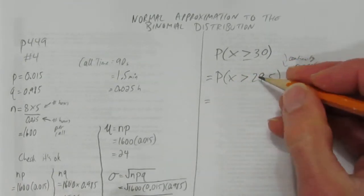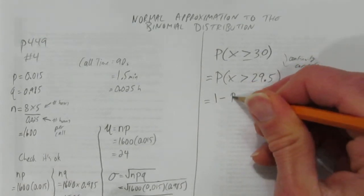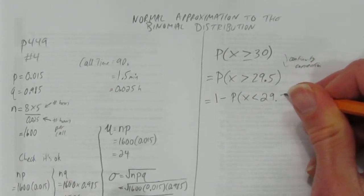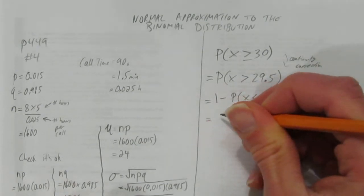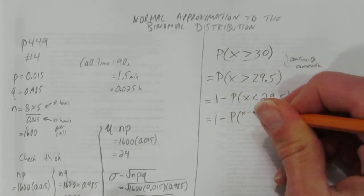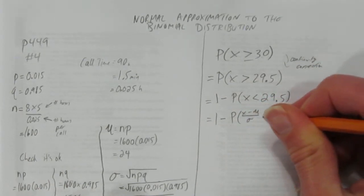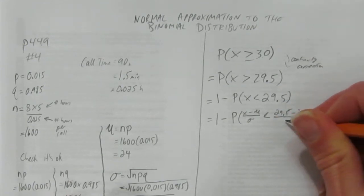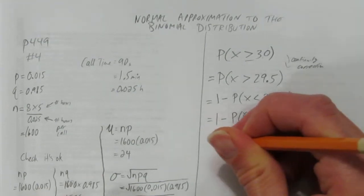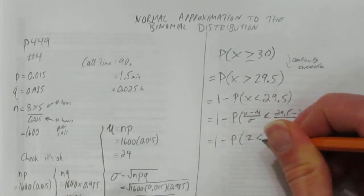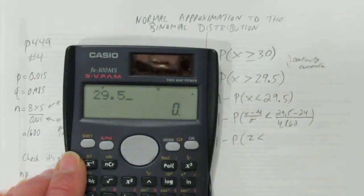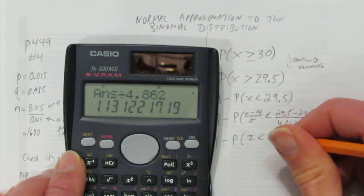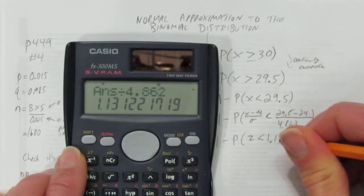The next thing to do is when we're doing z-scores and we have greater than, we need to do 100% minus the less than version. 100% is just 1 as a decimal, minus the probability that x is less than 29.5. And now we just use our z-scores to transform it. This is 1 minus the probability of x, take away mu and divide by sigma. So this is 29.5 take away the mean of 24 divide by 4.862.